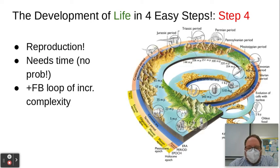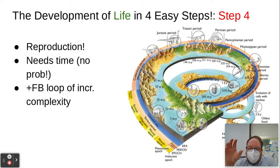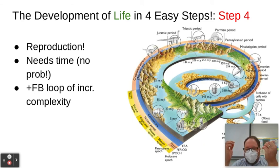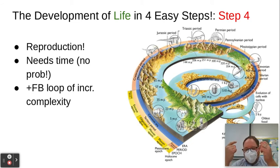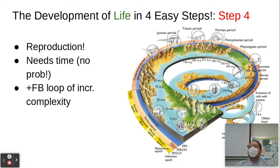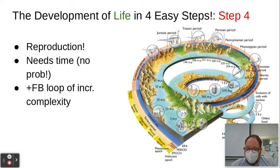Step four — you've got to repeat. If these cells can create molecules and the membranes divide, then you can have multiple cells. Over time, complexity can increase, and that's led to a positive feedback loop of ever-increasing complexity, giving us all this incredible diversity of life. And of course, with literally billions of years, it gives time for this kind of thing to occur.